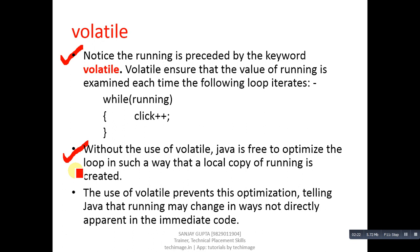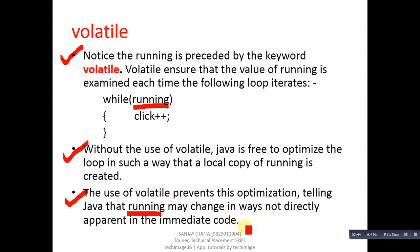If you want to avoid that problem, you can apply the volatile keyword so that a local copy cannot be created. The use of volatile prevents this optimization, telling Java that running may change in ways not directly apparent in the immediate code. So if the actual copy of running is changed and you have not used volatile, the local copy of running may not be updated and you will receive incorrect outputs.